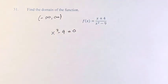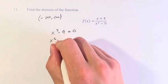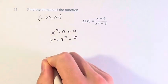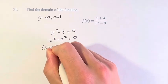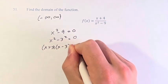We can factor this as the difference of two squares, right? This is x squared minus 3 squared. So this turns into x plus 3 times x minus 3 is equal to 0.